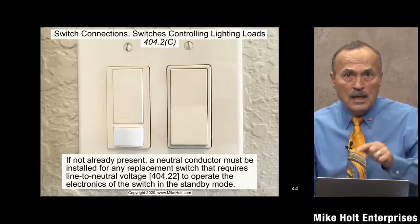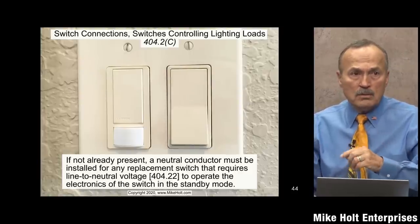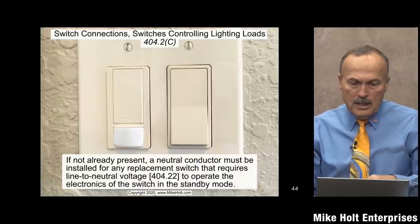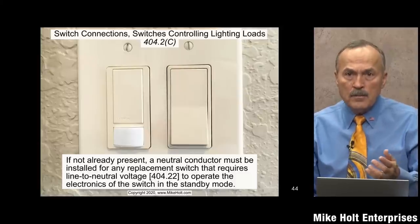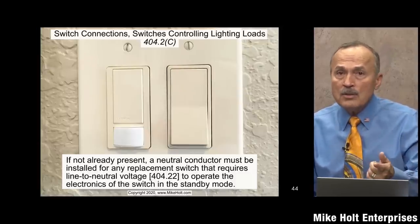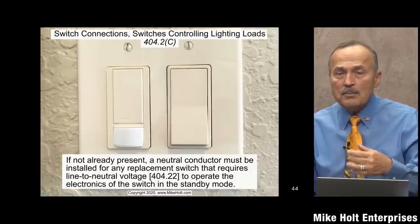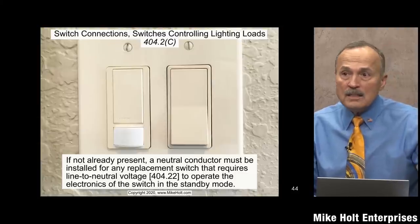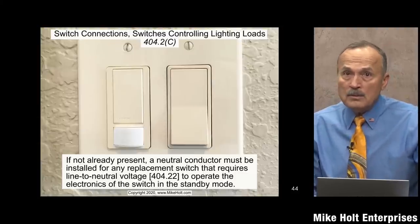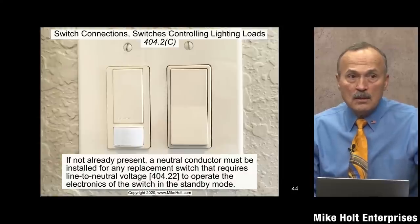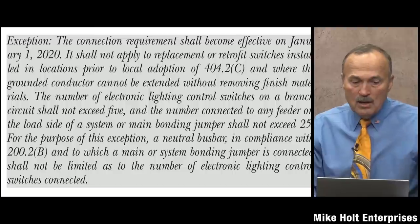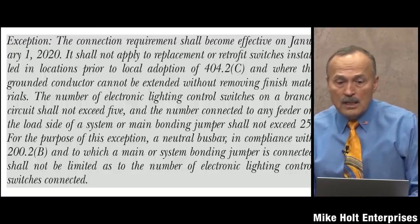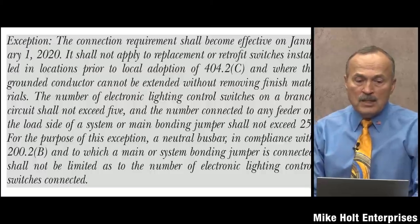The rule is: when installing an electronic switch, you need a neutral there; if no neutral is present, you must add one. The connection requirement for electronic lighting control switches became effective January 1, 2020 — this aligns with the 2020 NEC code cycle.